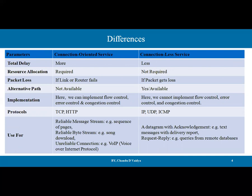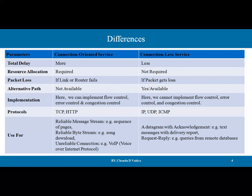Regarding packet loss: in connection-oriented service, if a link or router fails there is no alternative path, so the packet is lost. In connectionless service, there are alternative paths available. Implementation: in connection-oriented we can implement flow control, error control, and congestion control, but in connectionless we cannot. Best protocols for connection-oriented include TCP and HTTP; for connectionless: IP, UDP, and ICMP.